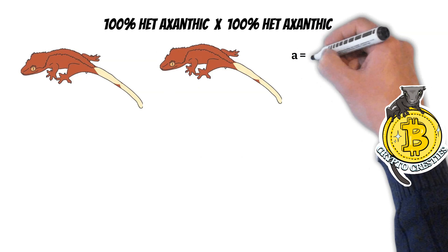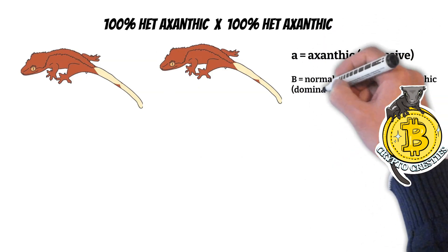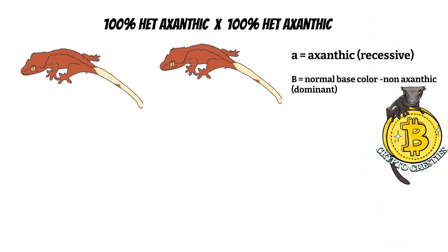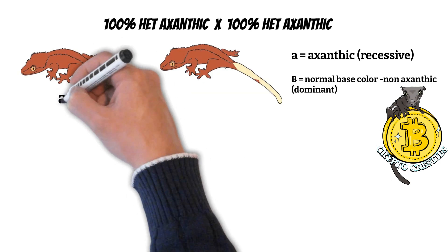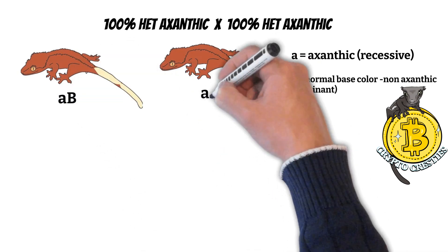This is not considered a possible. It is a definite, unless there's some kind of weird mutation that occurs that we know nothing about, which is highly unlikely, but not impossible. So with that in mind, let's look at these two geckos. Both are 100% het xanthics, and these are the offspring that came out of this pairing.